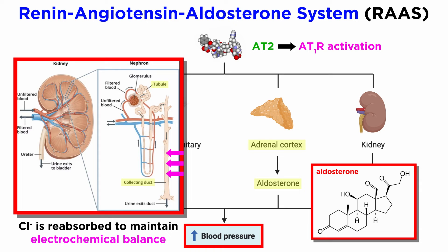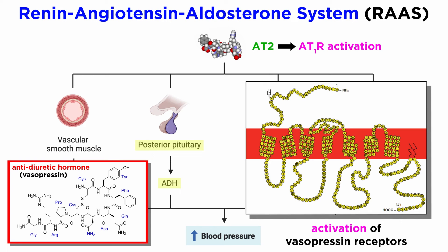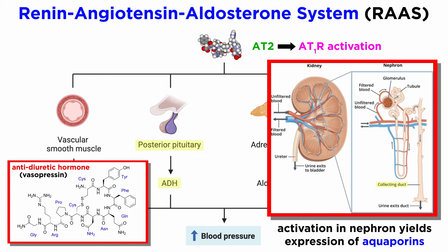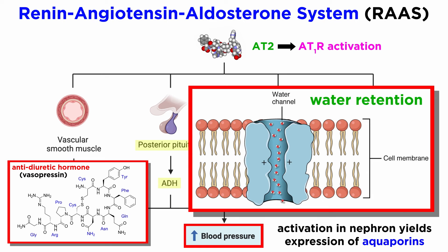It's important to be aware that Cl- will also be reabsorbed to maintain electrochemical balance. AT2 also increases the release of ADH from the pituitary gland. This peptide hormone activates vasopressin receptors. Activation of vasopressin receptors in the cells lining the collecting duct of the nephron increases the protein expression of aquaporins, which are channels that transport water out of the collecting duct, leading to more concentrated urine and, most importantly for this tutorial, the retention of water and the increase of blood pressure.